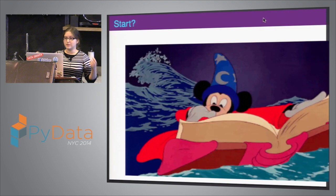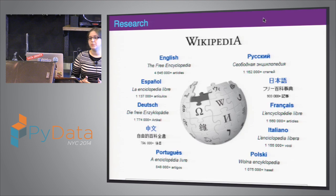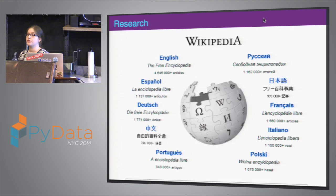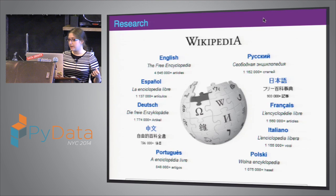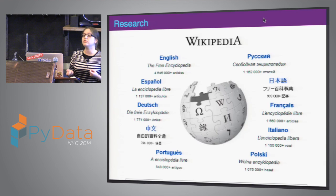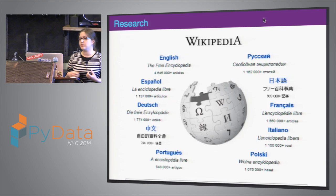Start with research. Wikipedia is your friend. You want to know where your data is from, who produces it, what your data is. If you're looking at crime rates, wiki crime rates — because you want to know what the typical values are, what the typical patterns are. There's nothing new under the sun; even if your data is brand new, something similar probably exists. Get a feel for what's going on.